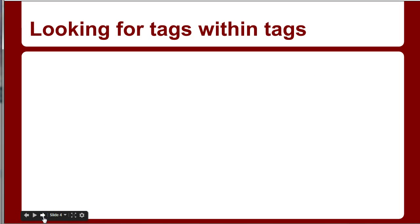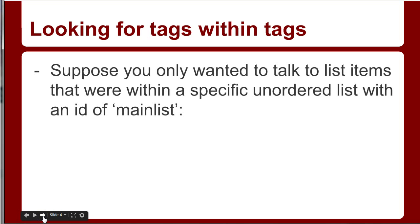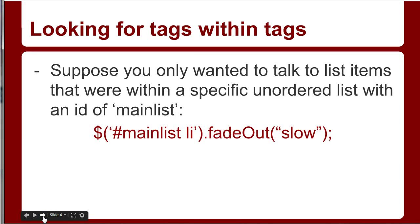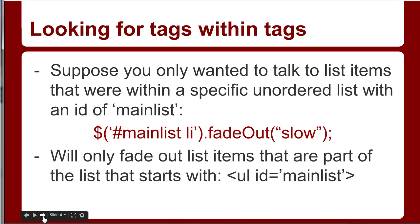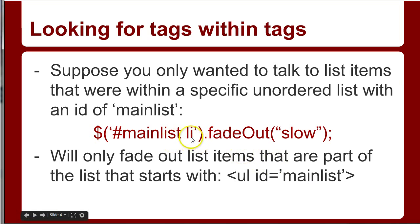We can also look for tags within tags. Suppose you only wanted to talk to list items that were within a specific unordered list with an ID of main-list. So `$('#main-list li').fadeOut('slow')` is only going to address the list items within a ul tag that has an ID of main-list — only those list items within that ID will apply to this fade-out command.